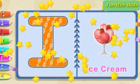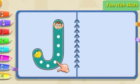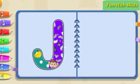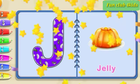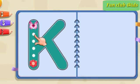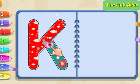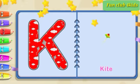I is for ice cream. Pull down, curve around. Pull down, go down. J is for jelly. Pull down, pull down, slide up, slide down.